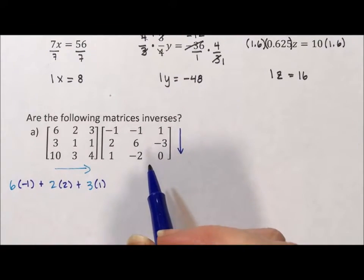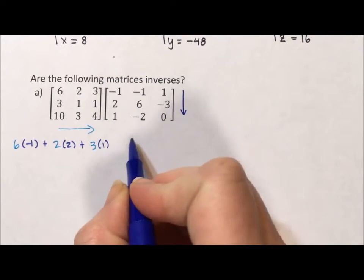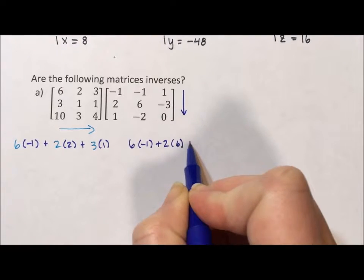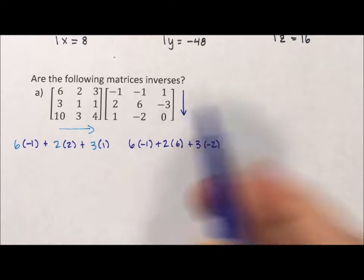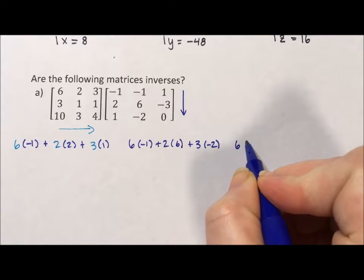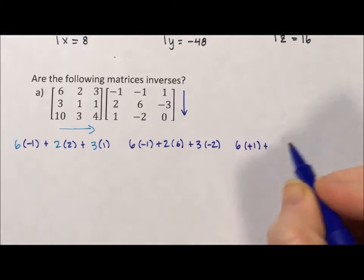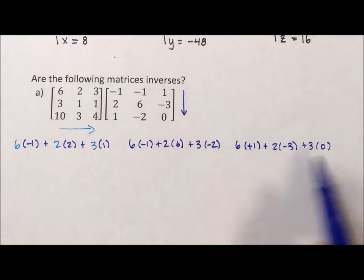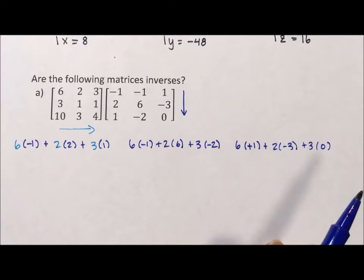The rest of the first row: first row second column is 6 times negative 1 plus 2 times 6 plus 3 times negative 2. And first row third element is 6 times positive 1 plus 2 times negative 3 plus 3 times 0. You'll notice in all of our first rows we have this 6, 2, 3 pattern.